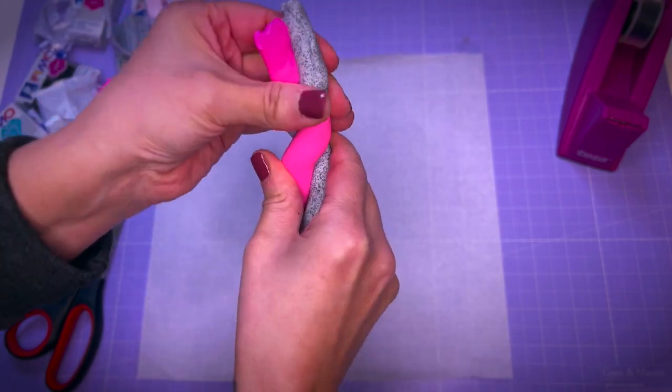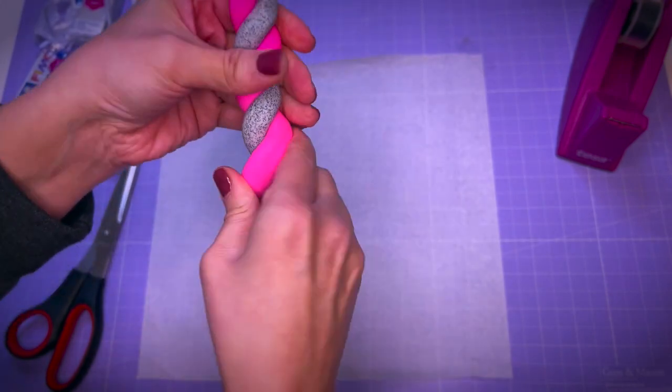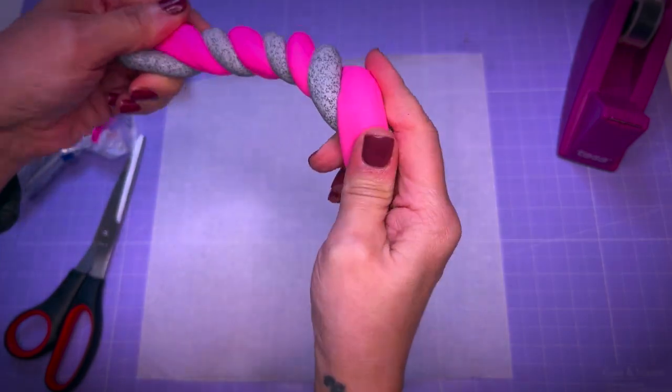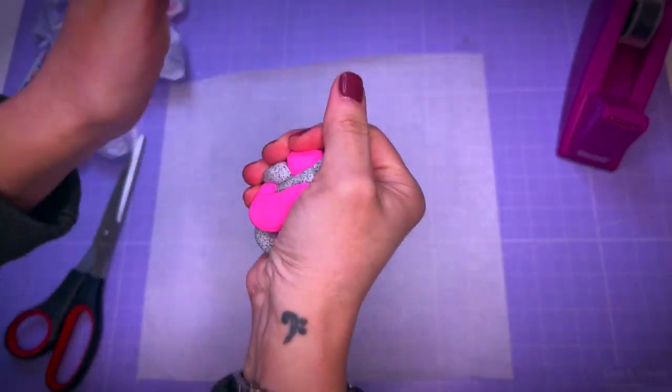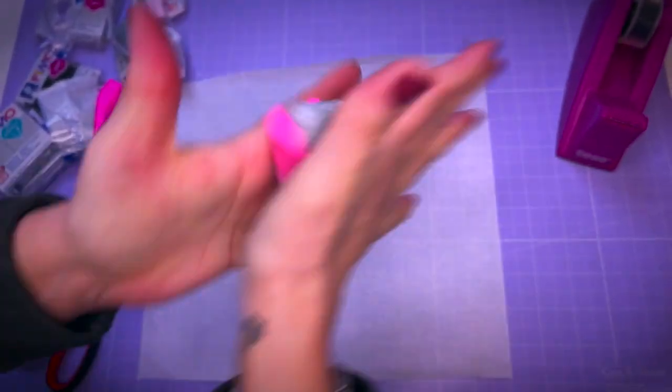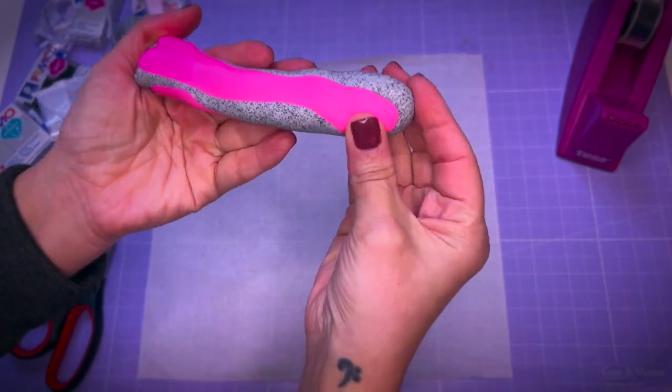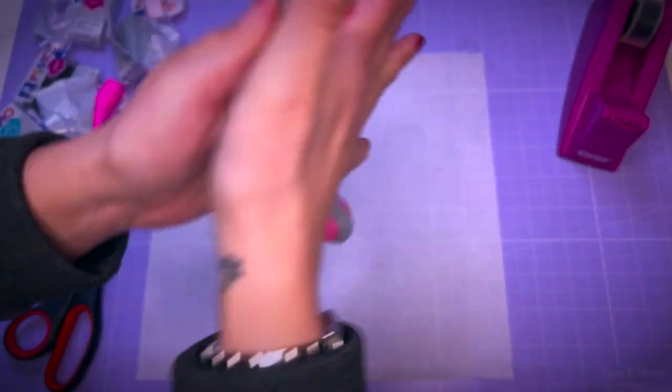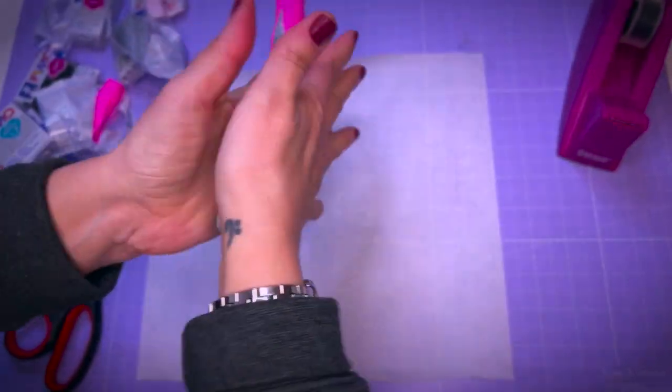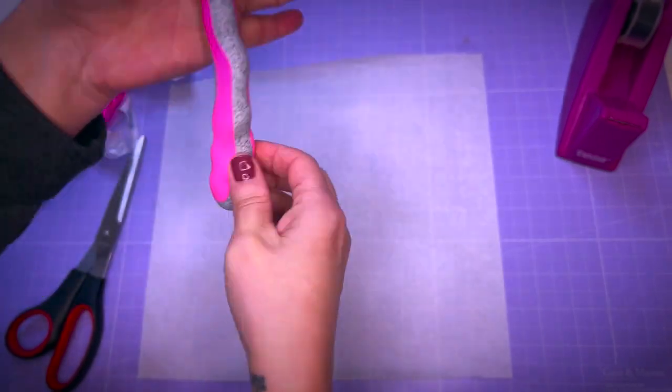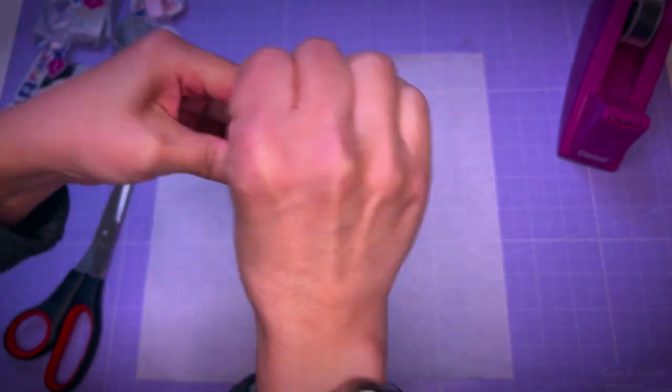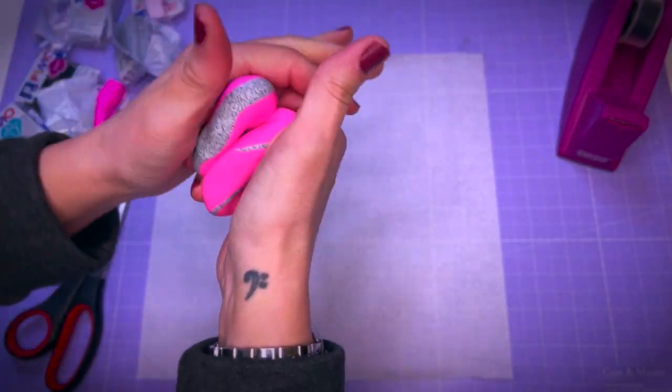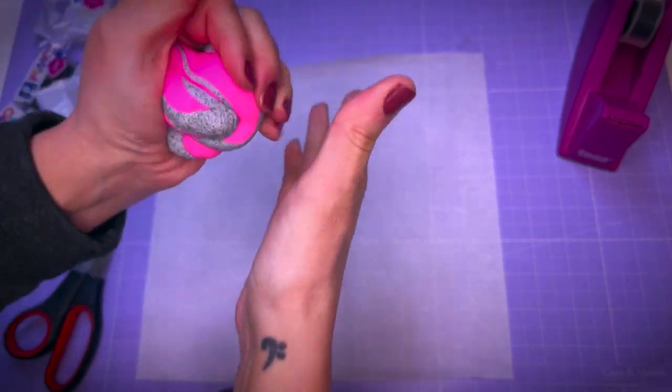I roll out both colors and then I twist them just like so. I roll another ball with it and continue until I reach the desired marbled look. If you want more color streaks you just continue.